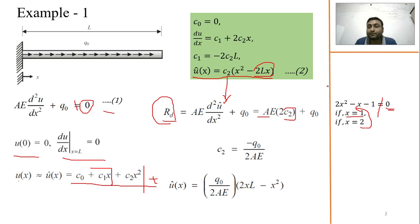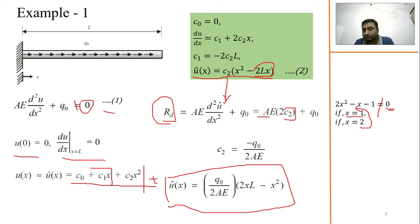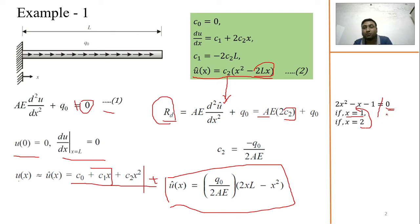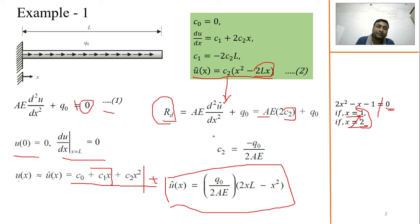After putting c₂ into the trial function, we get the solution. We don't know whether it is exact or approximate — we call it the approximate solution of the given differential equation. Setting RD = 0 works here because RD is not a function of x in this problem, so we can directly set it to zero.